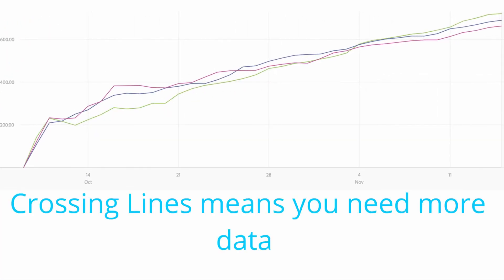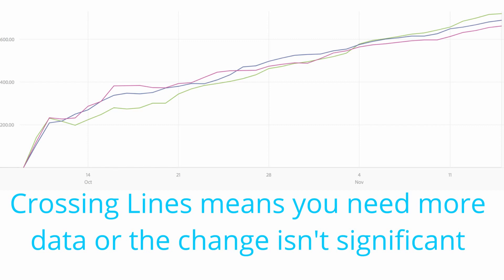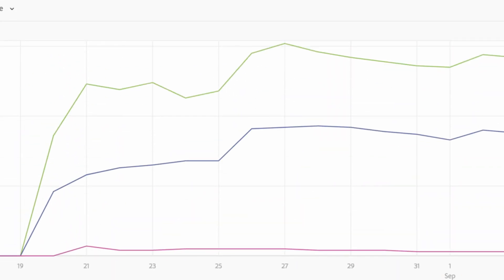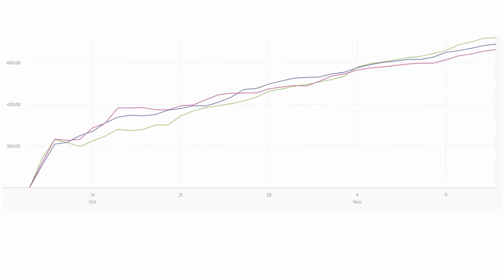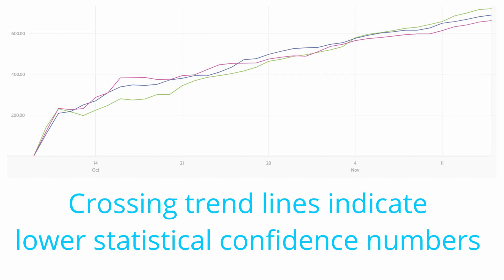On the other hand, if you see the graphs crossing and doing this back-and-forth thing, that's an indication that either you need more data, or the change isn't significant enough — and no matter how long you run the test, those graphs are going to keep crossing. This also ties into your statistical confidence: the more consistently different one graph's trend is from the other, the more likely you are to have a higher confidence number like 90% or 99%. If the graphs keep crossing, statistical confidence will come down.